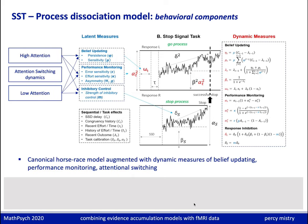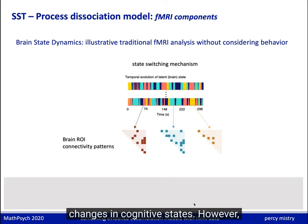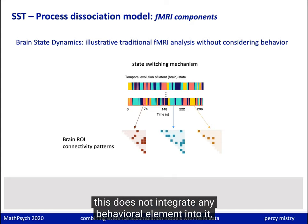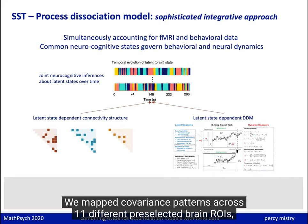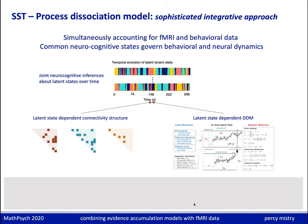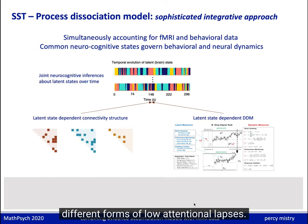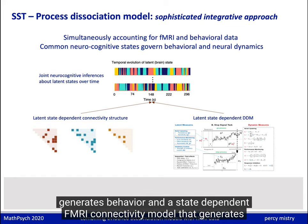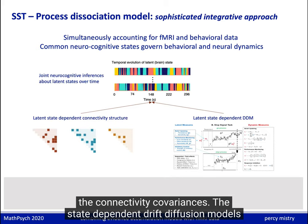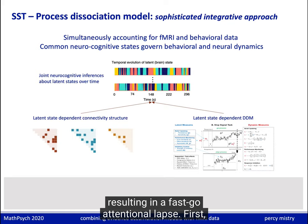For the fMRI data, recent studies have shown attentional state-space dynamics where covariance across brain regions is temporarily clustered to detect changes in cognitive states. However, this does not integrate any behavioral element, and states are clustered in an ad hoc rather than theory-driven manner. In our approach, we combined these two mechanisms by mapping covariance patterns across 11 preselected brain ROIs, allowing for a restricted number of cognitive states where each state corresponded to an a priori interpretation of high or different forms of low attentional lapses. The generative model thus has a state-dependent drift diffusion model that generates behavior and a state-dependent fMRI connectivity model that generates connectivity covariances. The state-dependent DDMs differentiate between high and low attentional states based on whether the belief updating system is actively invoked, whether it malfunctions, or whether there is a decision threshold lapse resulting in a fast-go attentional lapse.